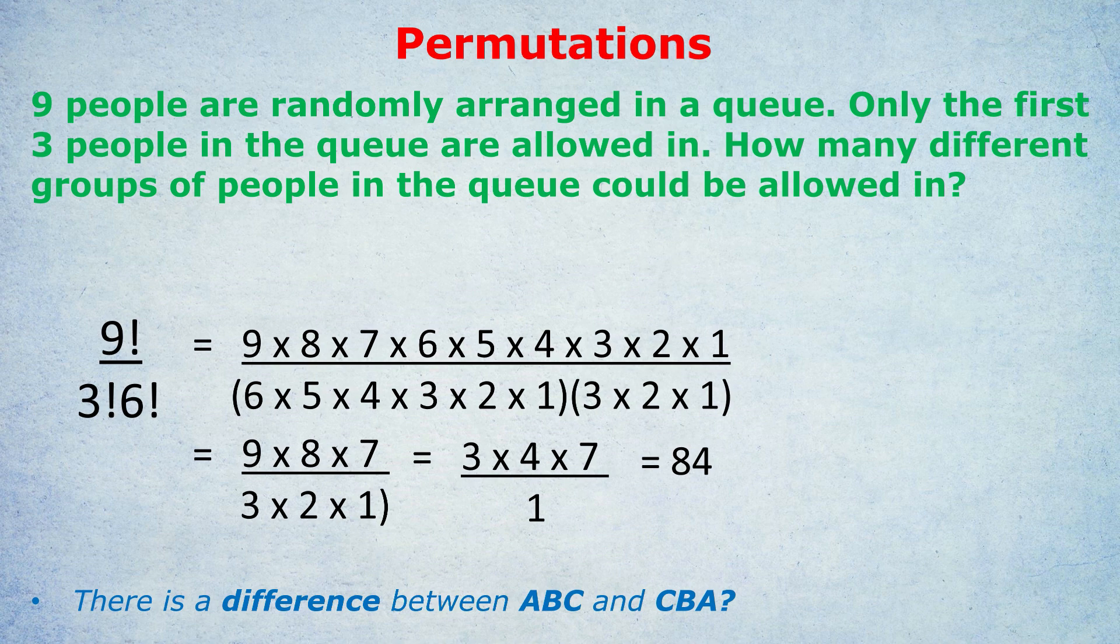And so we have 84 different combinations or different groups of people in the queue that could be allowed in. And again, we didn't care what order they were allowed in, those first three people. Just who were the first three people to be allowed in. There was no difference between ABC and CBA.